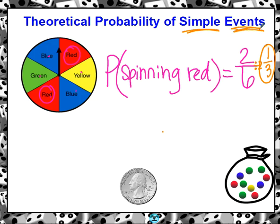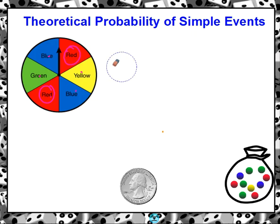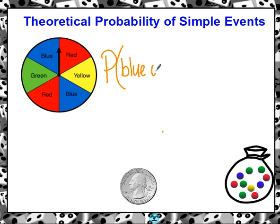We are talking about simple events. We're not spinning a red and then spinning a blue, and we're not spinning a yellow and then flipping a coin. We are only doing one thing — only talking about doing one experiment at a time.